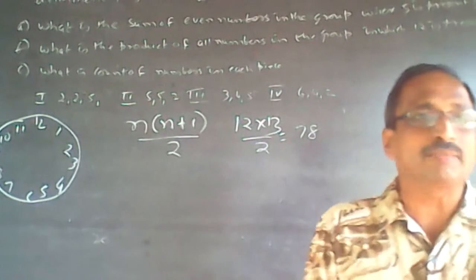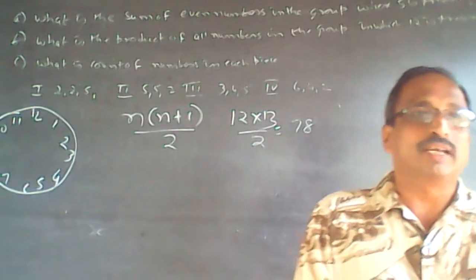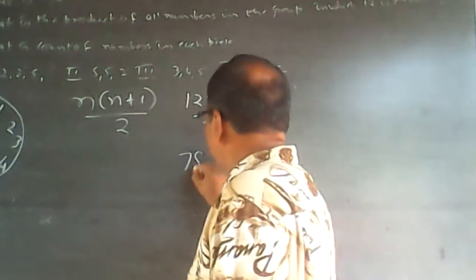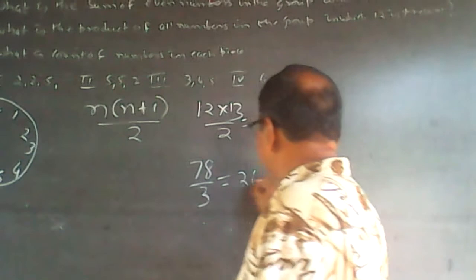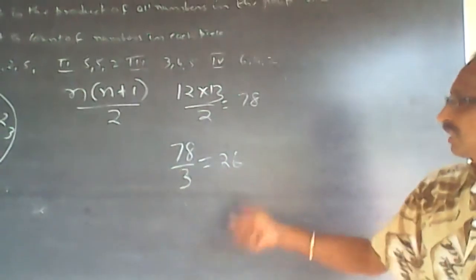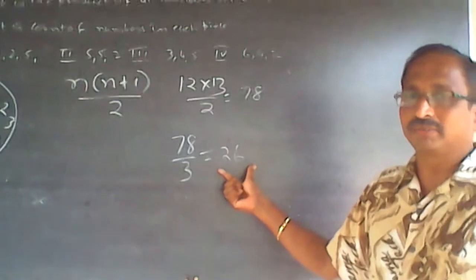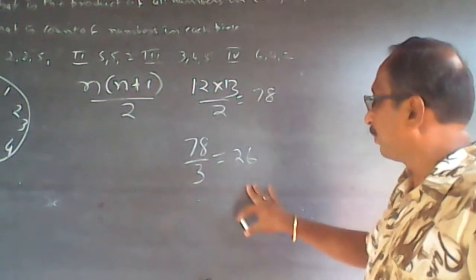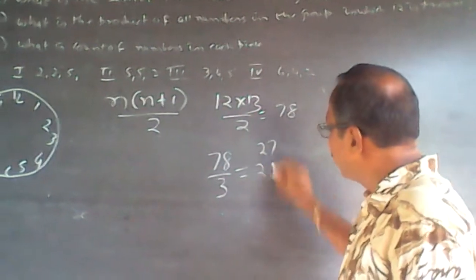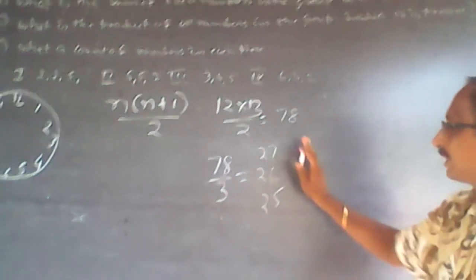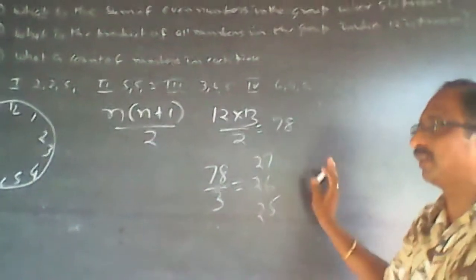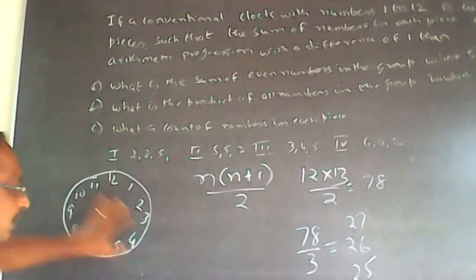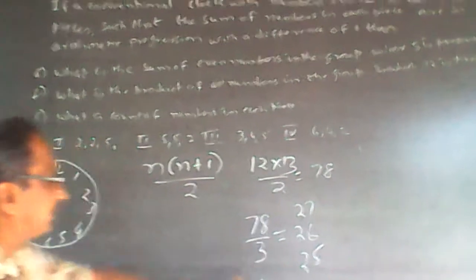Since there are 3 terms in the AP and the number of terms is odd, the center number is always the average. So divide 78 by 3, which gives 26. This is the center number — one above is 27 and one below is 25. So the three sums of the arithmetic progression are 25, 26, and 27. I want to cut this clock so that one piece sums to 26, another to 27, and the third to 25.